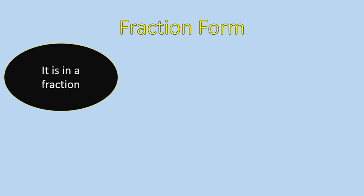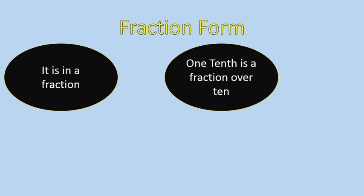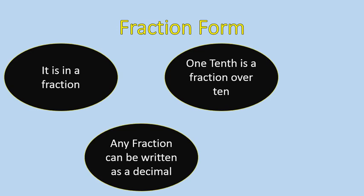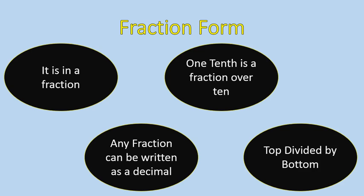Now let's take a look at fraction form. Fraction form is called that because it's written as a fraction. 1 tenth, for example, is that number over 10. So 1 tenth would be 1 over 10, 3 tenths would be 3 over 10, and 4 tenths would be 4 over 10. We're not reducing the fractions to lowest terms — we are just writing them in fraction form. Any fraction can be written as a decimal by taking the top of the fraction divided by the bottom.